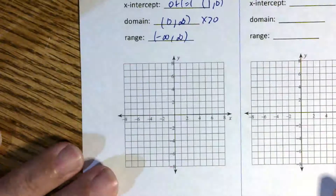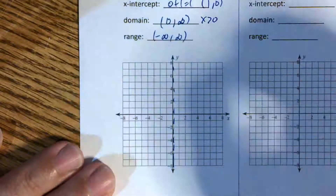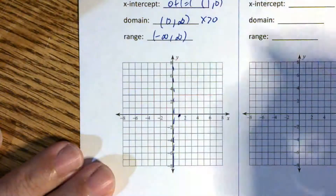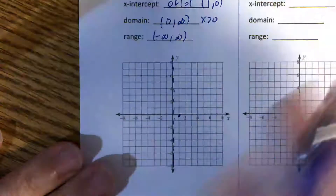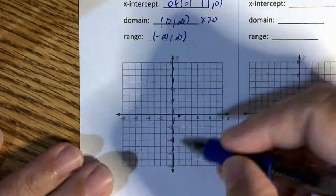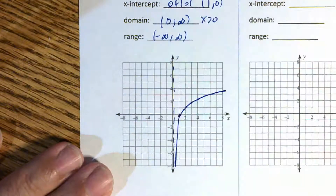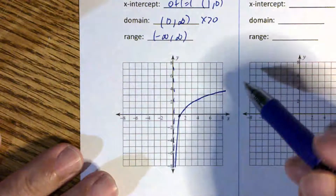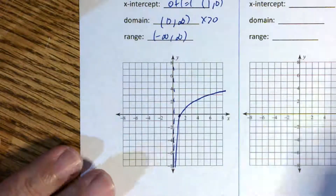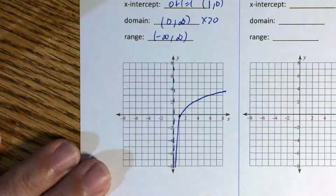To graph this, there's a vertical asymptote at x equals 0, and it has an x-intercept at (1, 0), so it's crossing there. All of these have the same shape — there's a vertical asymptote and it just goes up like that. They're all going to go up and to the right. The only thing that changes is where the x-intercept is and where the vertical asymptote is.